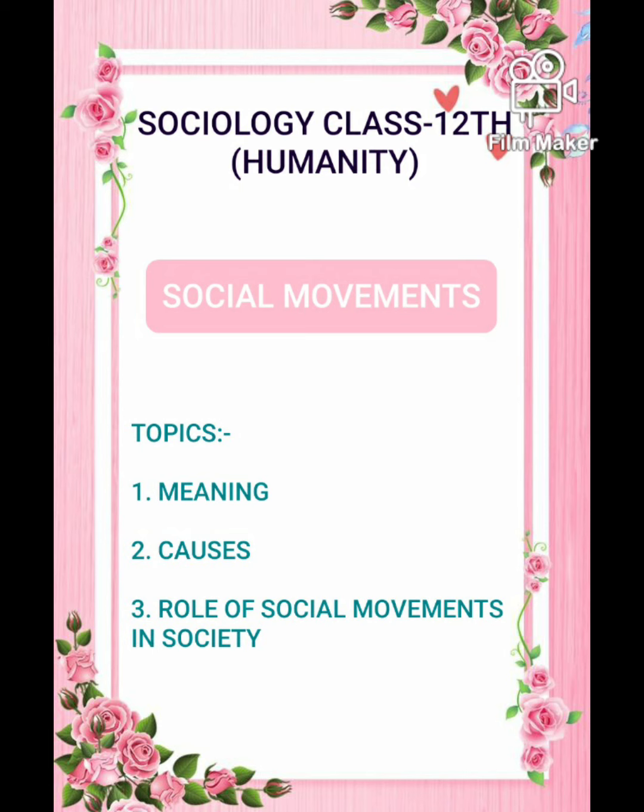Let us discuss some of the definitions given by sociologists. The first definition, according to Anderson and Parker: a social movement is a form of dynamic pluralistic behavior which progressively develops structure through time and aims at partial or complete modification of the social order. It may be complete or it may be partial.